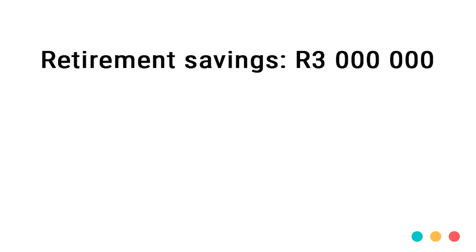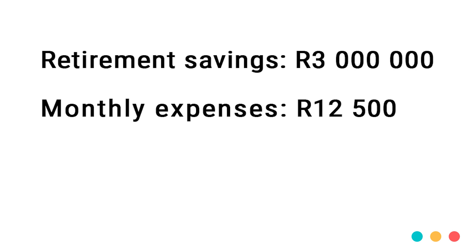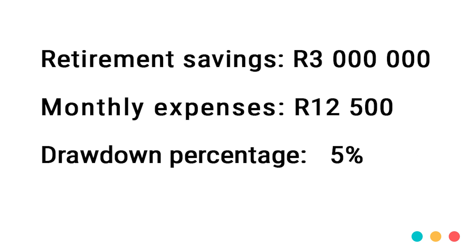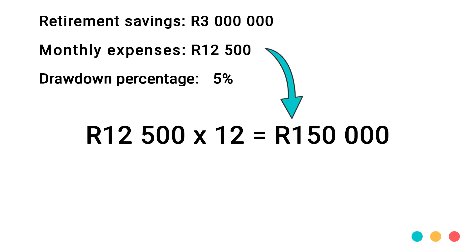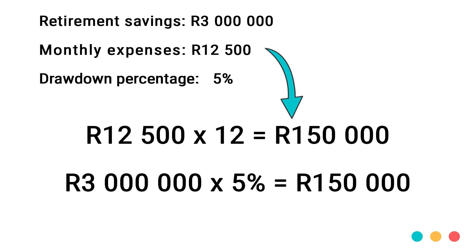Your financial advisor can guide you on this. In addition to investing the money, you need to pay yourself a salary from that investment portfolio — you need some form of income to cover your expenses in retirement. You invest that capital lump sum and then specify a certain percentage to be paid out to you each month. For example, if you have three million rand and your expenses amount to twelve thousand five hundred rand per month, you need to withdraw five percent from your living annuity each year. That's R12,500 times 12 = R150,000, which is five percent of three million rand. The full R150,000 can be paid out annually, in advance, quarterly, or as R12,500 monthly.